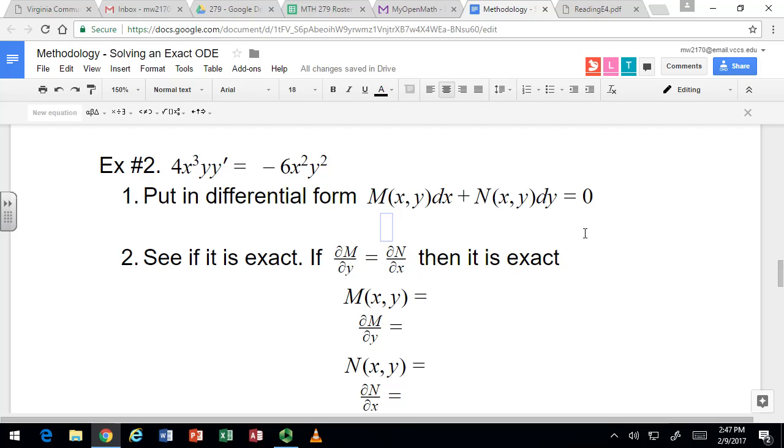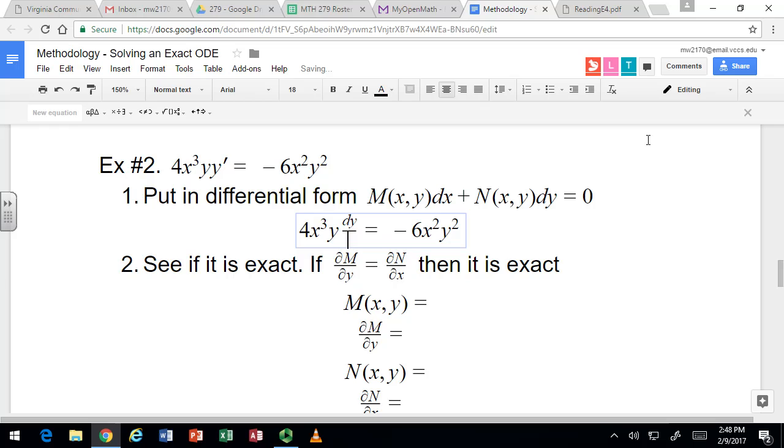We need to replace y prime with that notation to put it in this form. So we can actually start off right at the very beginning by replacing y prime with dy dx. Then to clear the fraction and get rid of that dividing by dx, we're just going to multiply both sides by dx.